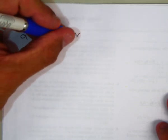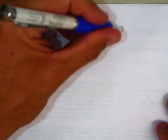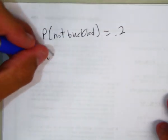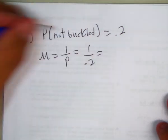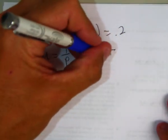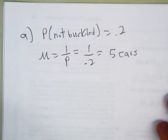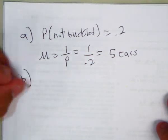Question A: How many cars do they expect to stop before finding a driver whose seatbelt is not buckled? The probability of not buckled is 0.2. So, on average, they would expect to stop 5 cars. 1 divided by 0.2.